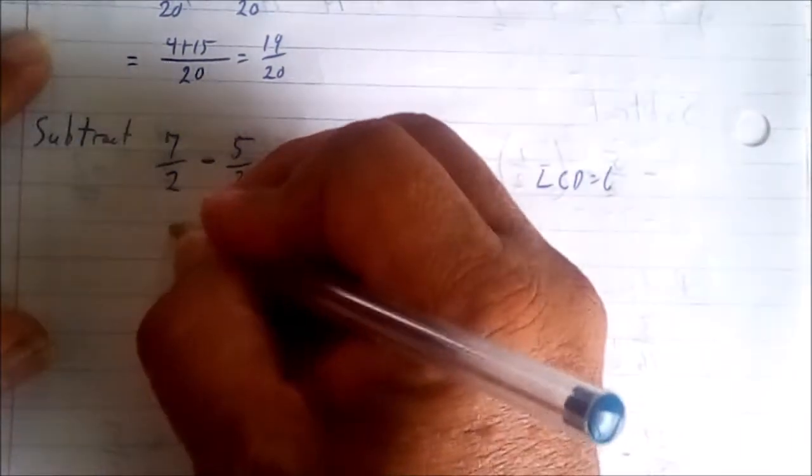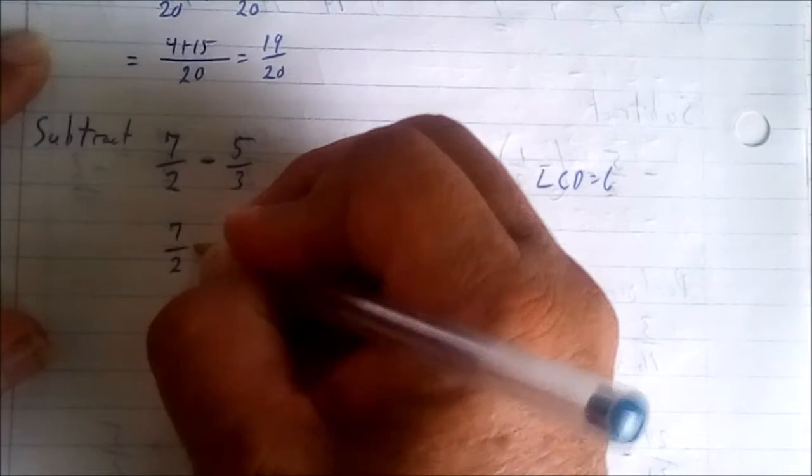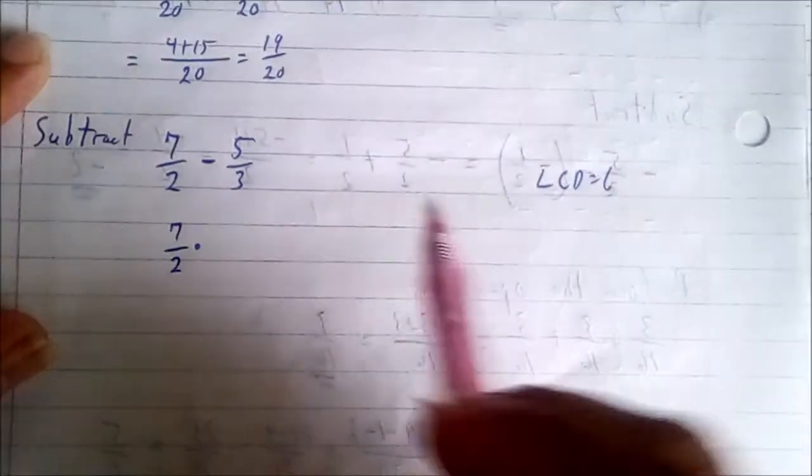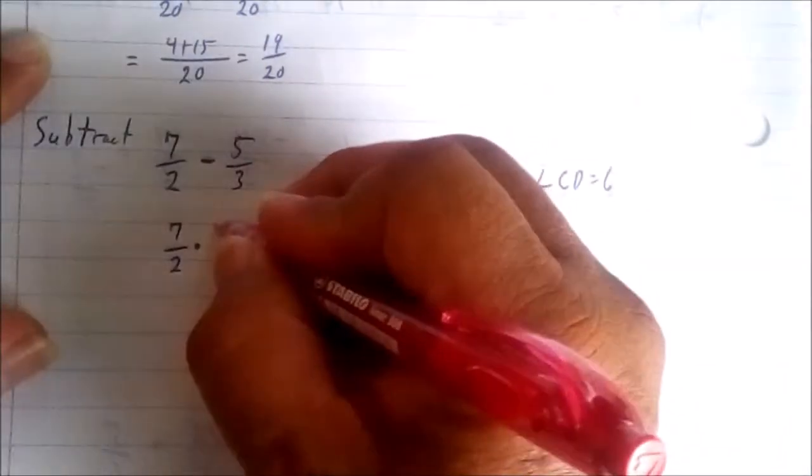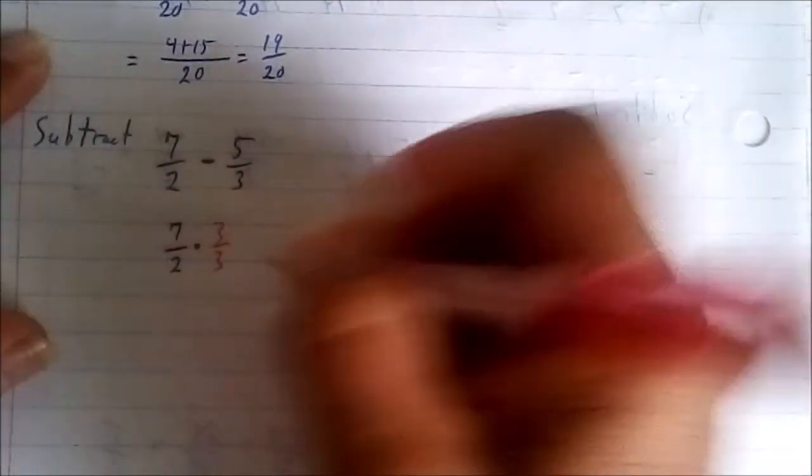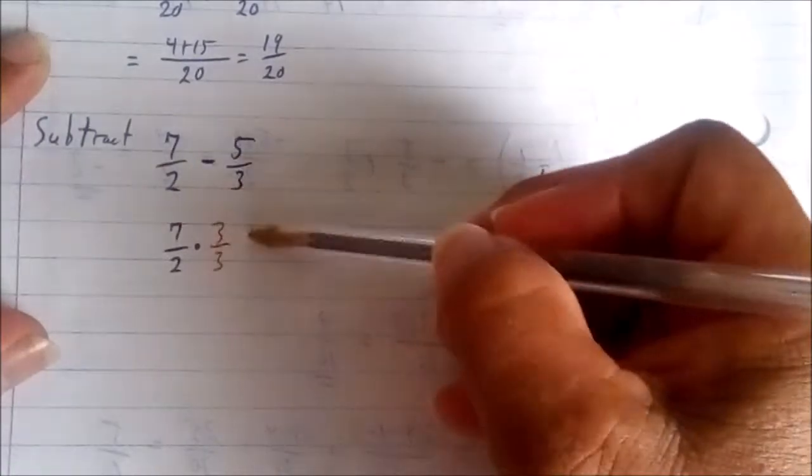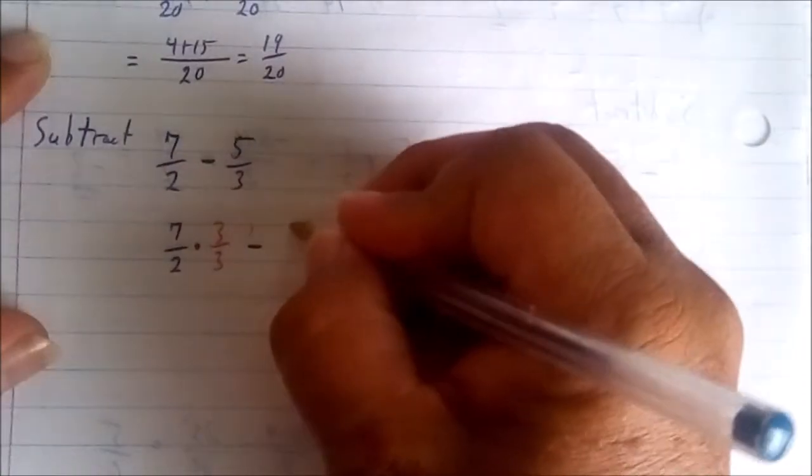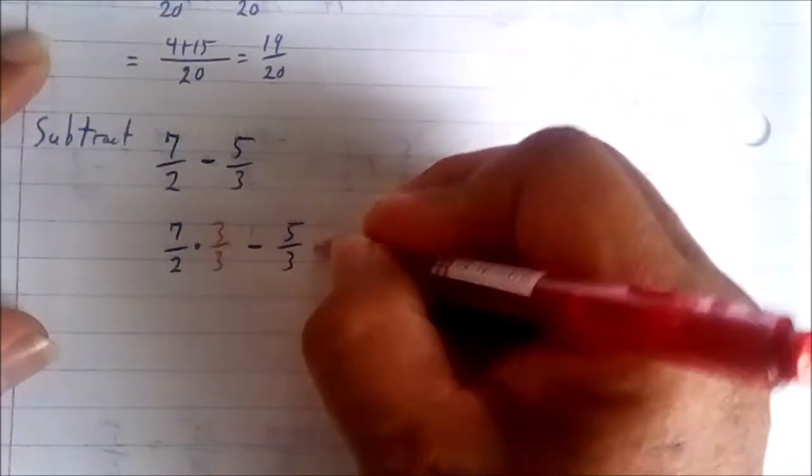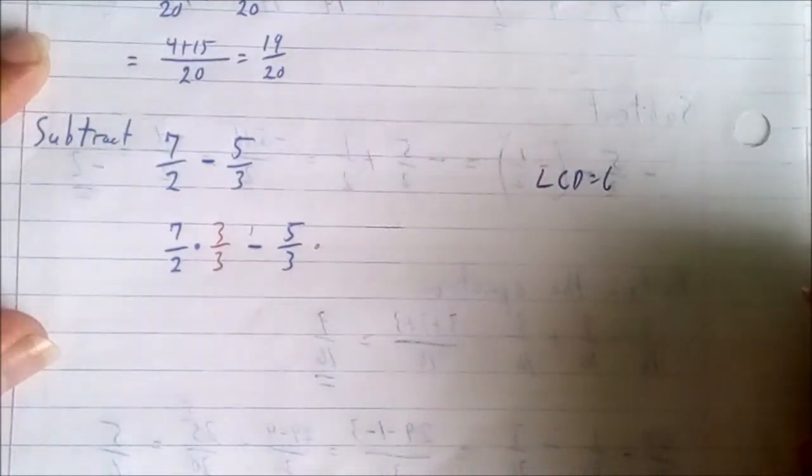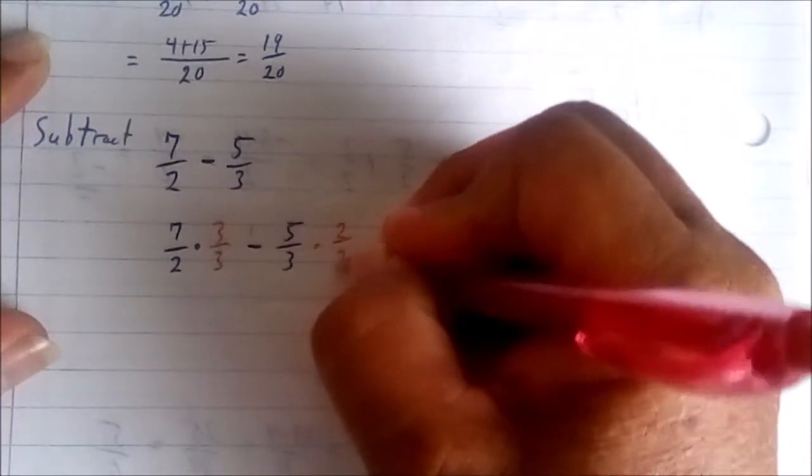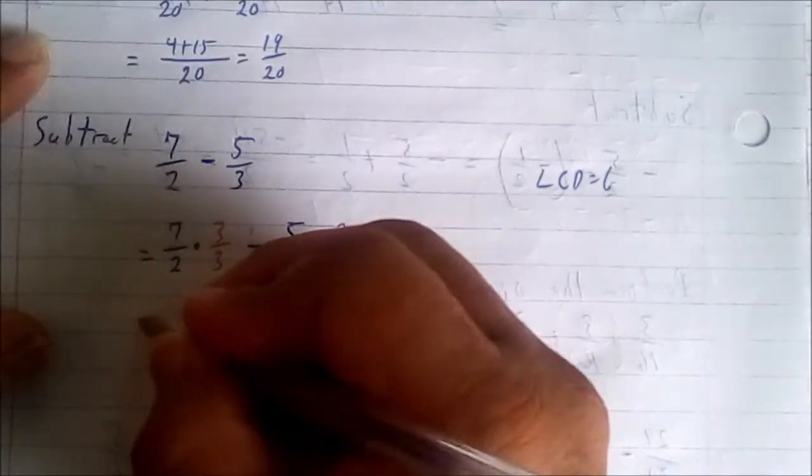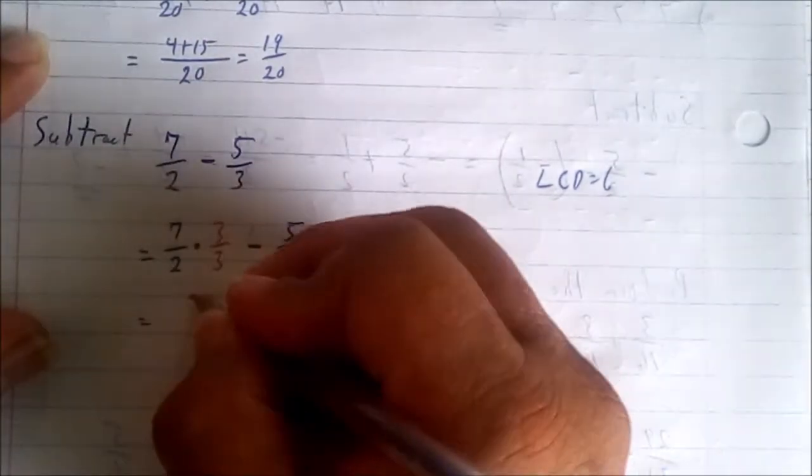LCD equals six. I must make both of them have the same denominator, so therefore the next step is seven over two times one value. Two times what will give me six? The value is three, so I must multiply the top by three and the bottom by three. Bring down this sign which is minus, I put five over three. Now three times what will give me six? That will be simply two, so we put two at the top and two at the bottom.